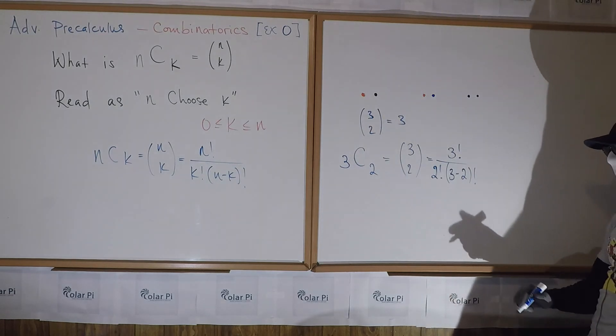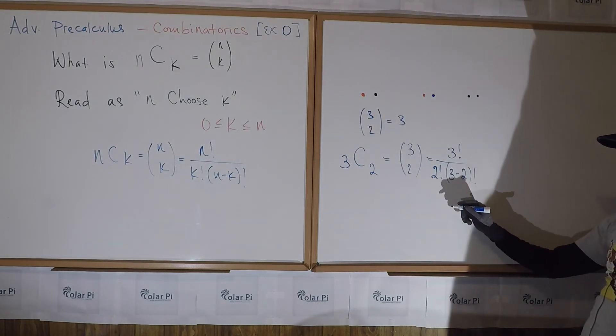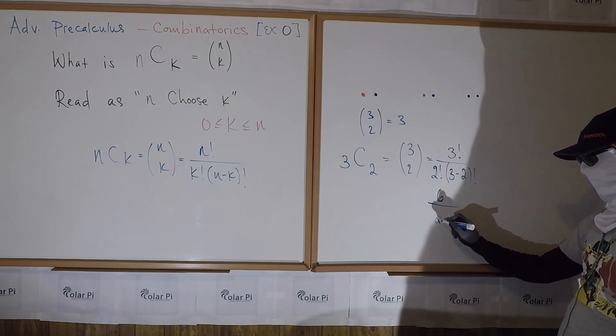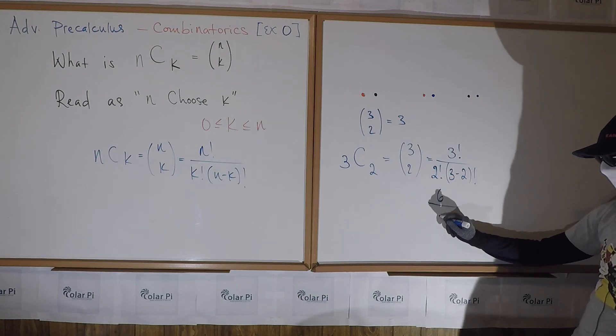So what would that be? That would be, well, 3 factorial is 6, so it'd be 6 divided by... and this is 2, and that's 1 factorial, which is the same as 1. So 6 divided by 2, and that in fact is 3.